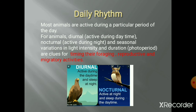Diurnal means the animals and organisms are active during the day time and they sleep at night, while nocturnal animals are active at night and sleep during the day time. In animals, diurnal or nocturnal and seasonal variations are observed. The light intensity and duration - that means for how long the light is available - affects the timing of their foraging.